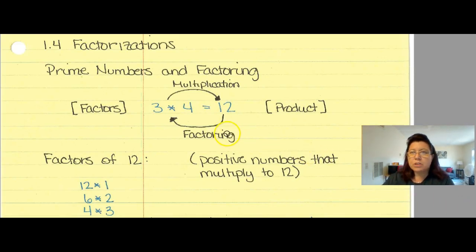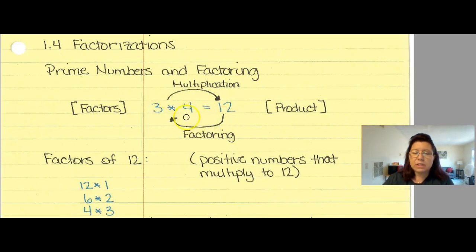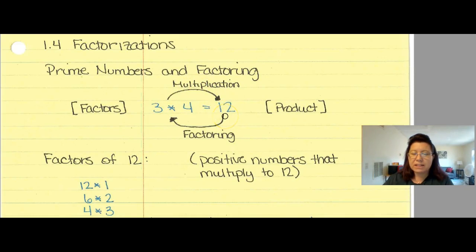You've been doing factoring for quite a while. If I take something like 3 times 4, that equals 12. 3 and 4 are factors of the product 12. So in the forward direction I'm multiplying, but if I take 12 and find the components it's made up of — those are factors — that is factoring.